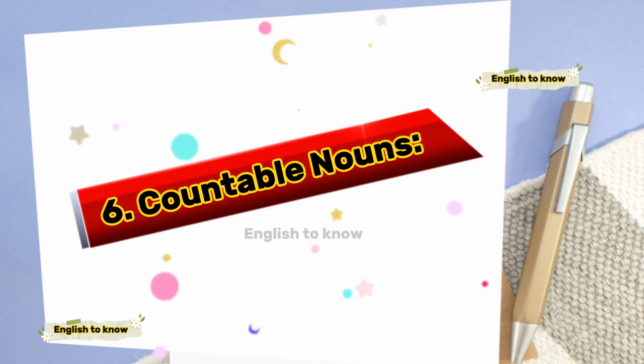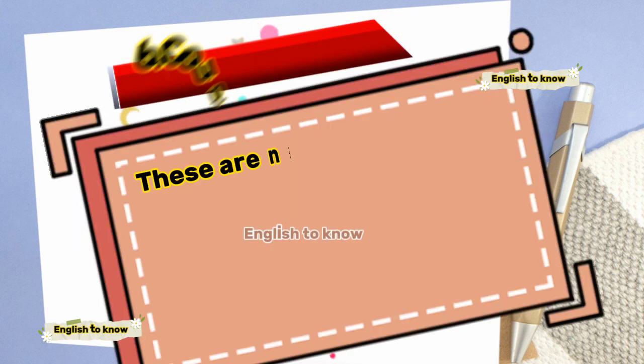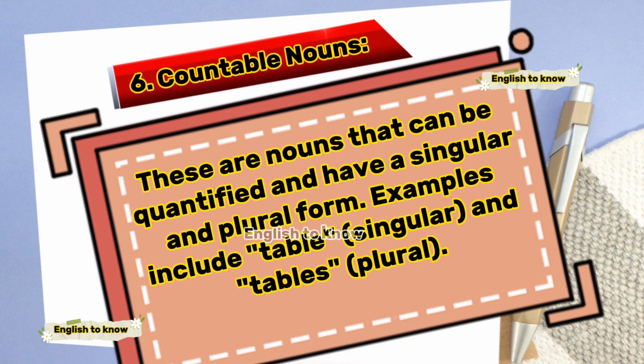Countable nouns are nouns that can be quantified and have a singular and plural form. Examples include table (singular) and tables (plural).